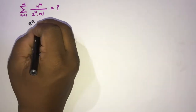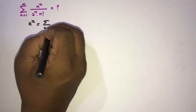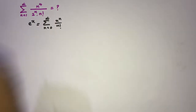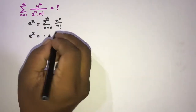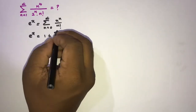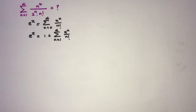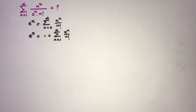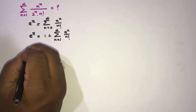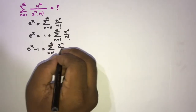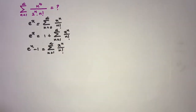We know e^x equals the sum from n=0 to infinity of x^n over n factorial. We can also write this as 1 plus the sum from n=1 to infinity of x^n over n factorial. In a previous video we solved an infinite series using differentiation, and in this video I'm going to use derivatives as well. So we can write e^x minus 1 equals the sum from n=1 to infinity of x^n over n factorial.